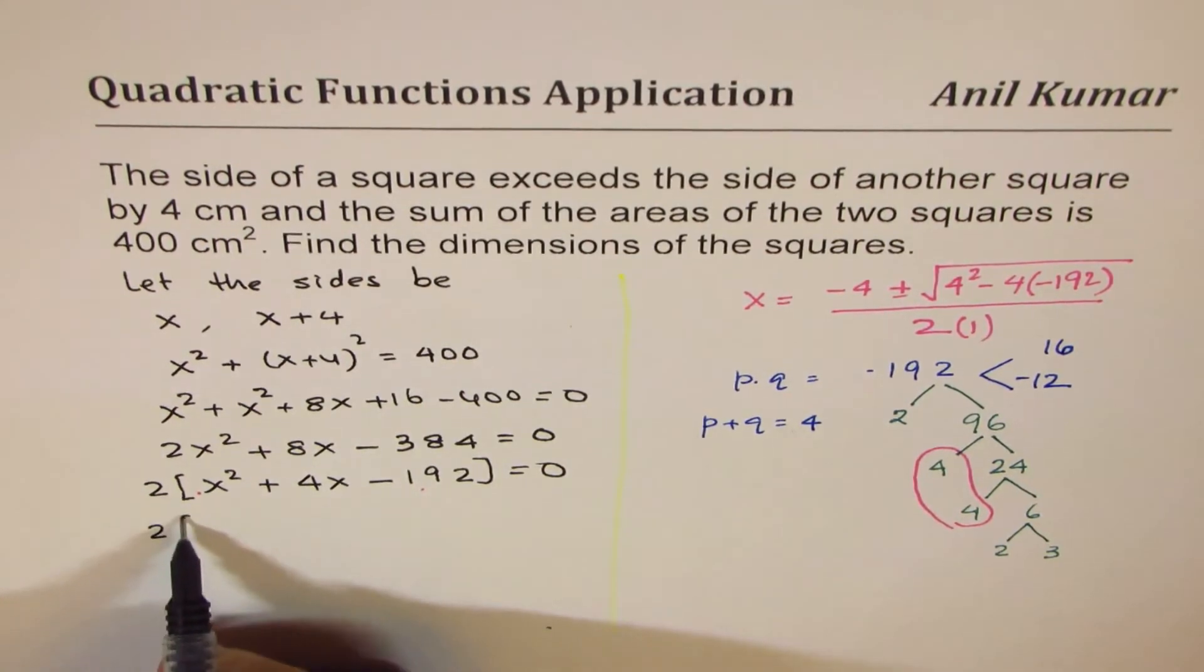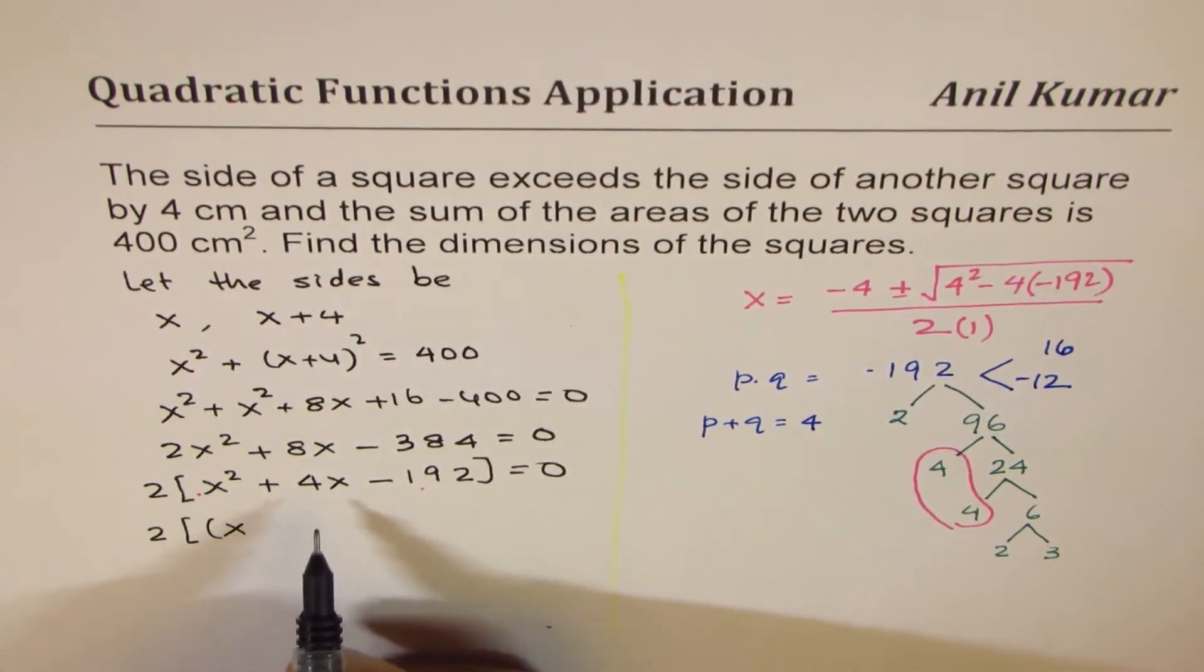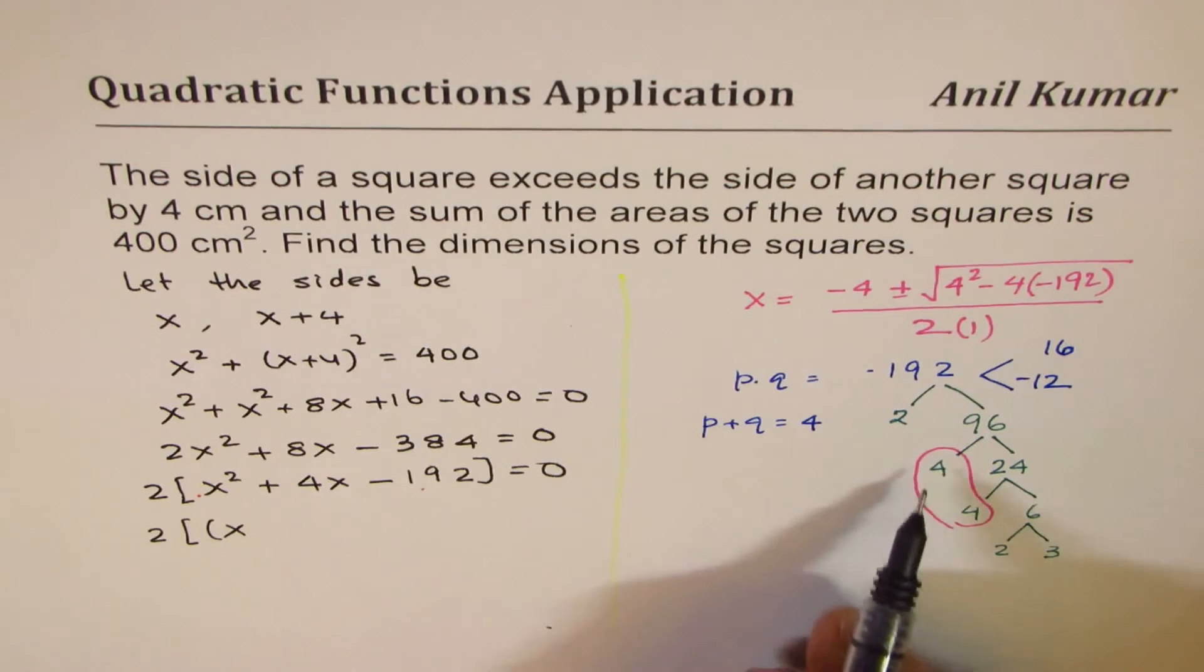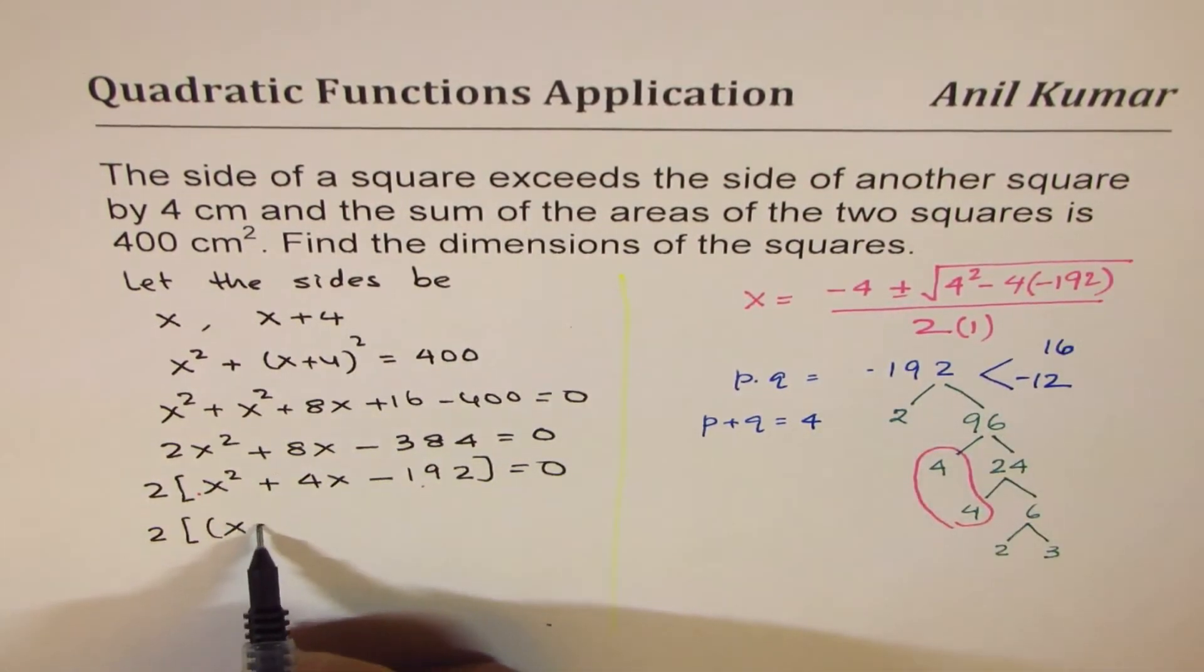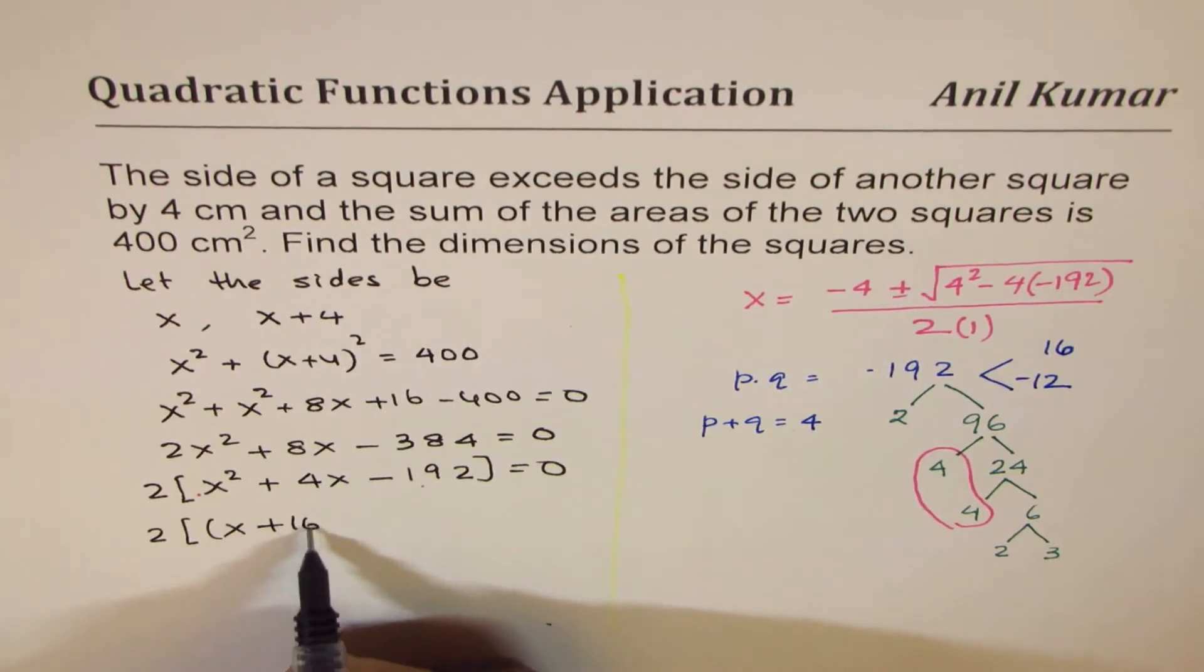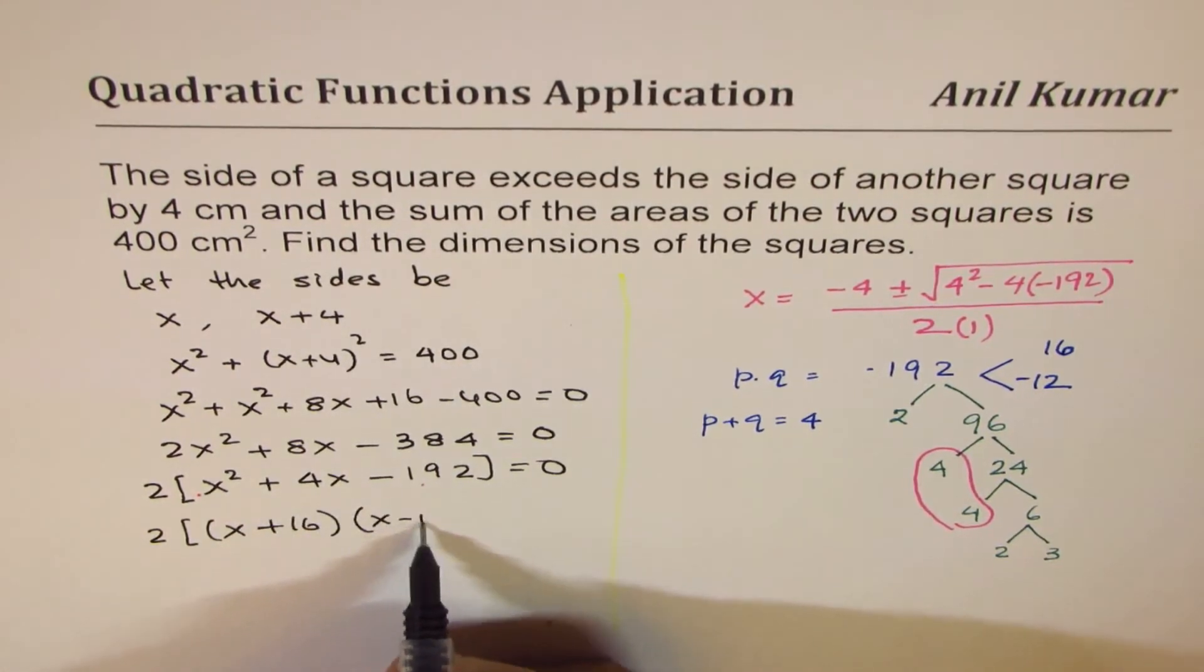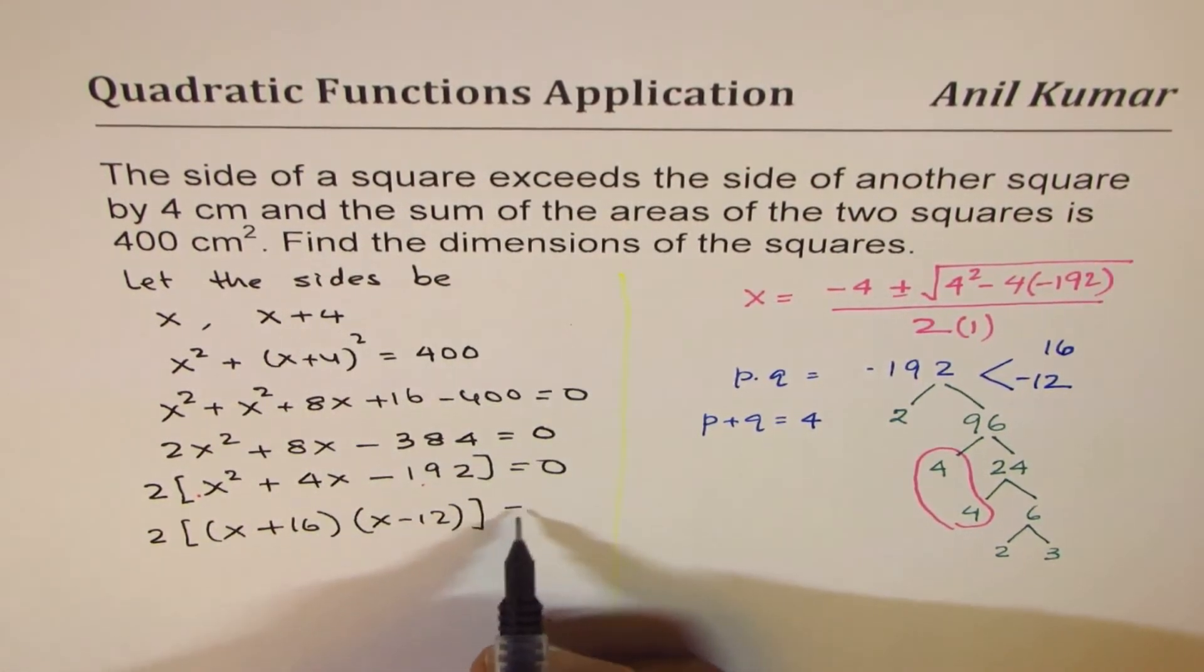So we have here x, since we have this combination 16 and 12. 16 is positive, so we have (x + 16)(x - 12) = 0.